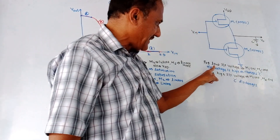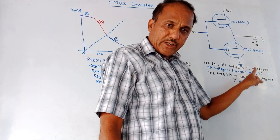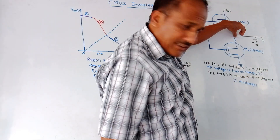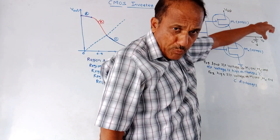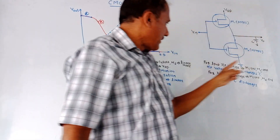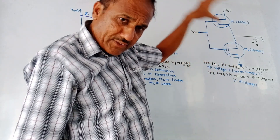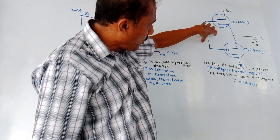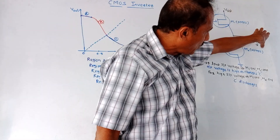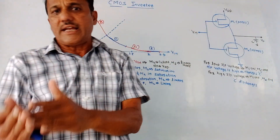It will charge the capacitor C. In this case, M1 is on and M2 is off, and it will charge the capacitor C. Since output is available, the output will be logic high. So when we apply low input voltage, PMOS gets switched on and at the output, you get a high voltage. This is the inverter action.